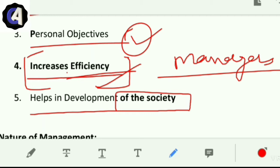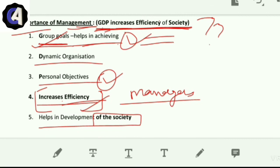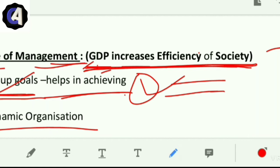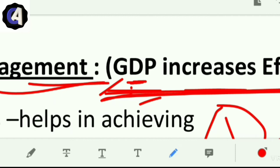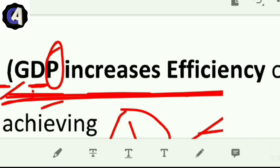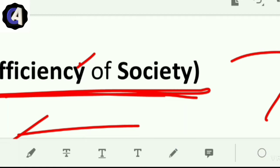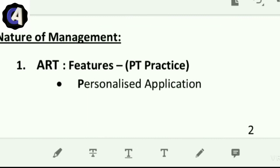S means helps in development of society. It helps because when a business organization starts, it hires people, creates employment opportunities, provides schools, builds schools and temples, and does a lot for society because it has social objectives to fulfill. So GDP increases efficiency of society - G for group goals, D for dynamic organization, P for personal goals, increases efficiency, and helps in development of society.